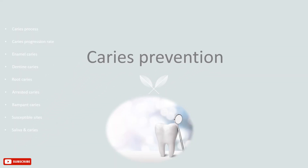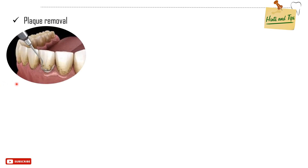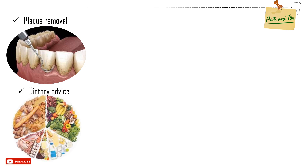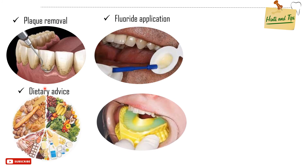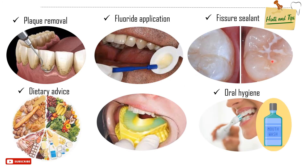Caries prevention: approaches that are possible to prevent caries include reduction in the availability of microbial substrate by plaque removal using physical or chemical means, dietary advice to patients, fluoride application, fissure sealing, and regular tooth brushing, which is also important in prevention of periodontal disease.